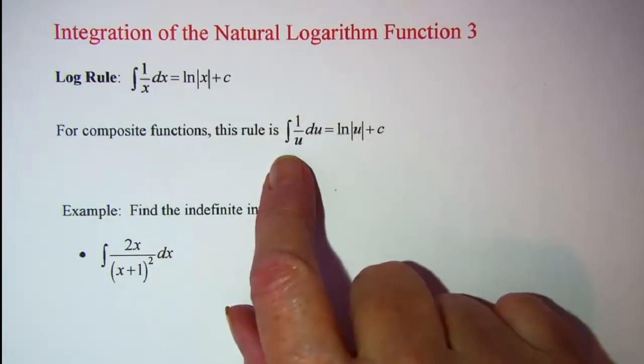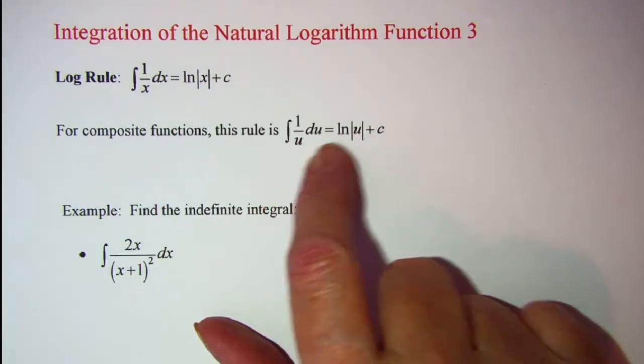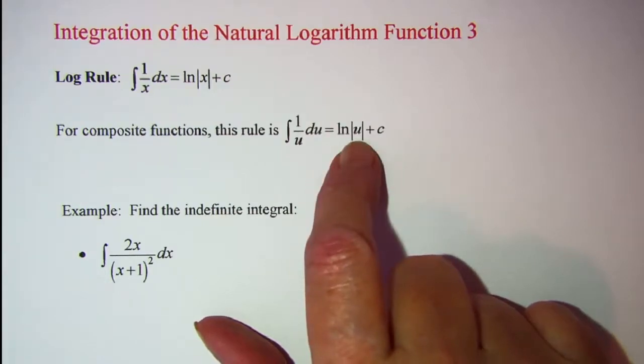If we have a composite function, the integral of 1 over u du is equal to ln absolute value of u plus a constant.